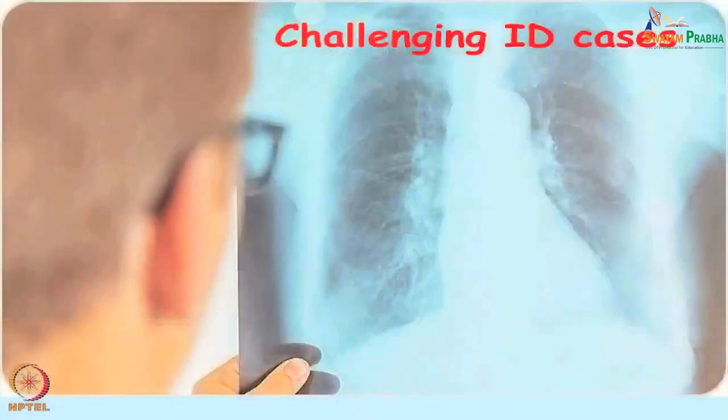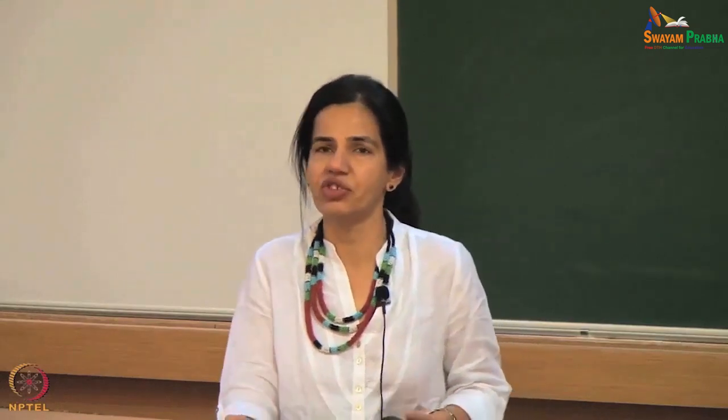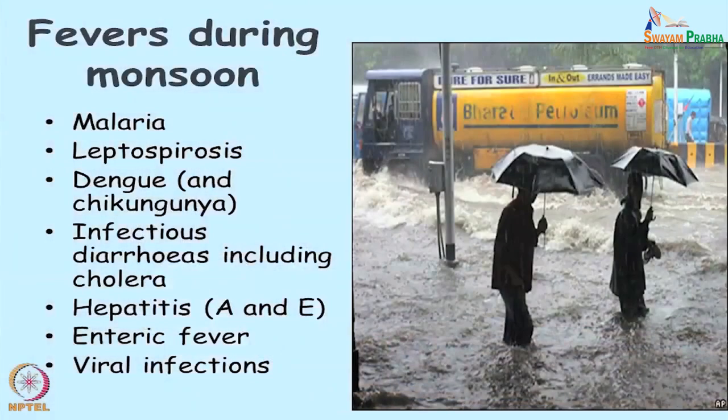These are some challenging cases in infectious diseases which I thought I would discuss with you. During the monsoon, as you must be aware after the 2005 deluge, we literally have a deluge of illnesses which we collectively call monsoon-related illnesses. These illnesses include malaria, leptospirosis, dengue, chikungunya, infectious diarrhoea including cholera, hepatitis A and E, enteric fever which is typhoid, and viral infections.